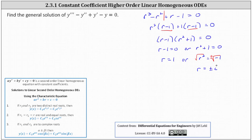We have one real solution and two imaginary or complex solutions. Where if the complex solutions are in the form of alpha plus or minus beta i, notice alpha is equal to 0 and beta is equal to 1.